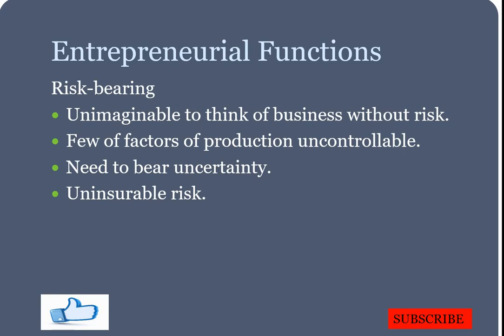An entrepreneur bears uncertainty, which is defined as a risk which cannot be insured. Sometimes the business may be subjected to natural calamities which are totally unpredictable. For example, the lockdown was totally unpredictable — when the government stopped economic activities for three months, it was difficult for an entrepreneur to imagine that would happen. Uncertainty can never be insured; a risk can be reduced through the insurance principle, but the entrepreneur cannot avoid risk in business.